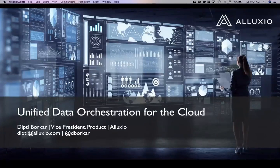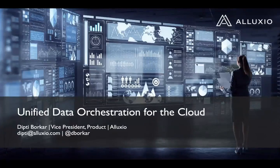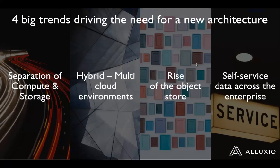I'm here to talk a little bit about Aluxio. Aluxio is a unified data orchestration layer for the cloud. In today's world, we're seeing four big trends driving the need to think about a new architecture. We're seeing a separation of compute and storage becoming increasingly important as enterprises move to a hybrid and multi-cloud environment, as well as new storage technologies like object stores in the cloud and on premise becoming more important.